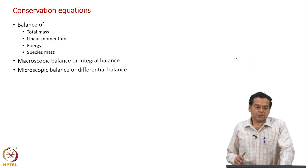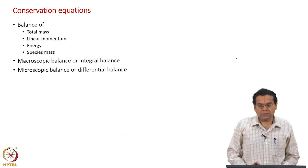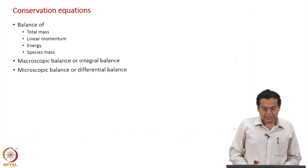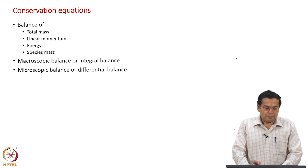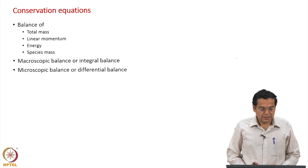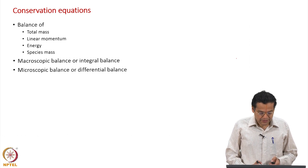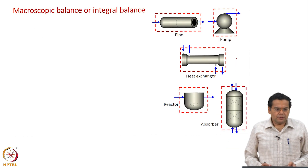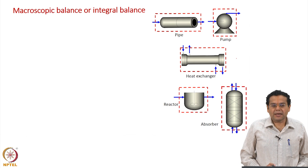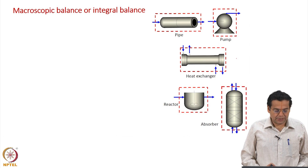We are going to derive conservation equations which state the balance of total mass, linear momentum, energy, and species mass — both in the macroscopic form and the microscopic form. Alternate names are integral and differential. Macroscopic tells you it is over the entire equipment, and the form of the equation you get is integral. Microscopic balance is for a small region inside the equipment and the equation you get is a differential equation.